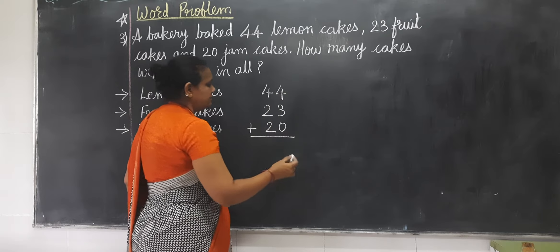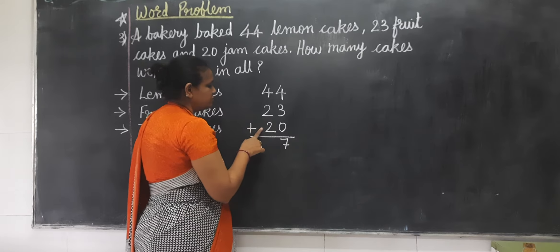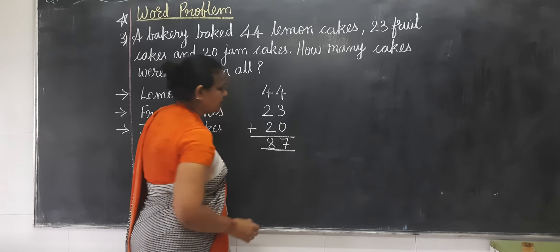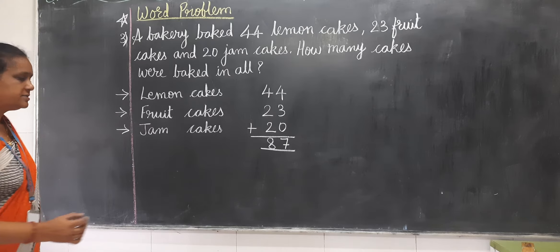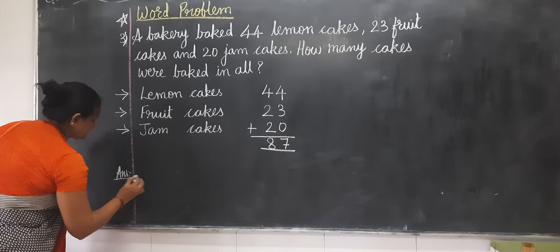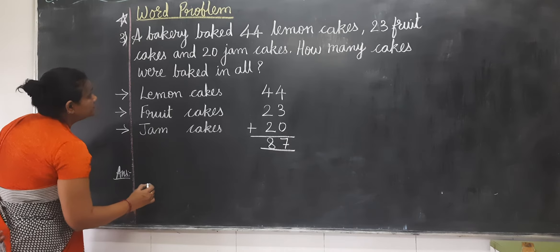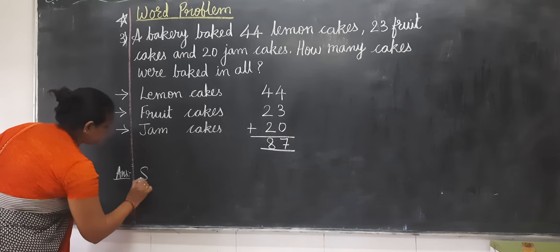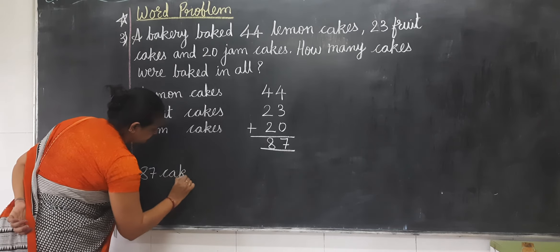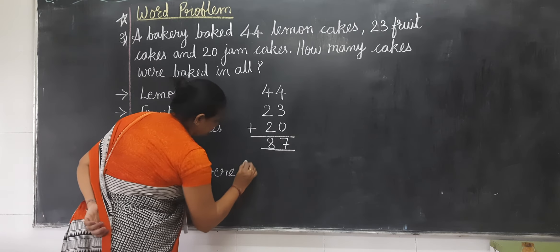Now we do the addition. 4 plus 3 is 7. 4 plus 2 is 6. 6 plus 2 is 8. So how many cakes were baked? 87. The answer is 87 cakes were baked.